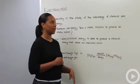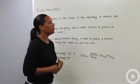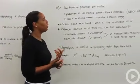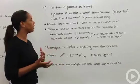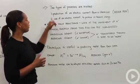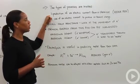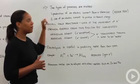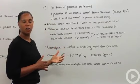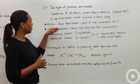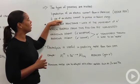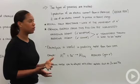There are two types of processes involved in this electrochemistry or electrolysis process. The first is production of an electric current from a chemical, done by inducing a redox reaction. The second is to use that electric current to actually produce a chemical change.